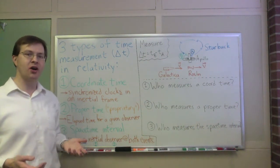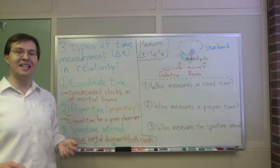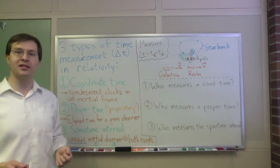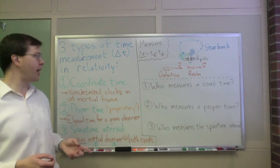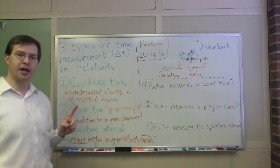That's coordinate time, and it's all based on an inertial frame. The key thing, as you've seen if you've read anything about relativity, is that different inertial frames have different synchronization of clocks, and so different inertial frames will, in general, give different values of delta T. That's the first type of time we talk about.